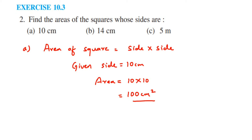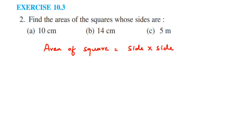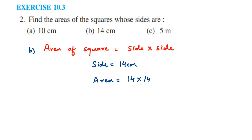In the second one, they have given side as 14 centimeters. So side is equal to 14 centimeters. Area will be equal to 14 multiplied by 14, which is 196. So the answer is 196 centimeter square.